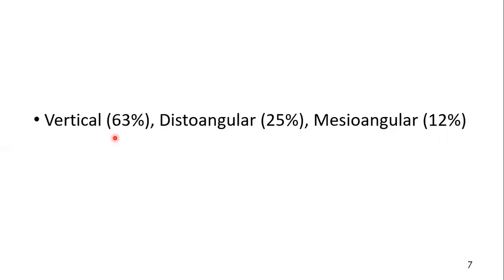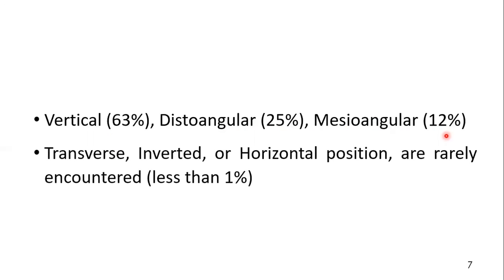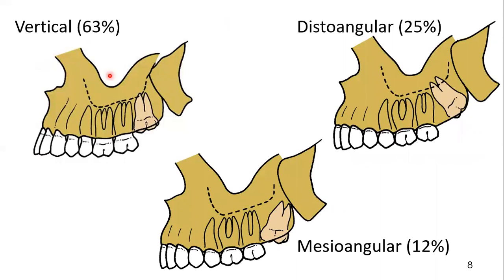Vertical impaction is the most common impaction, accounting for 63 percent of impactions. For mandibular impaction the most common is mesoangular, but here for maxillary it is vertical. Distoangular is the second most common, accounting for 25 percent. Mesoangular accounts for 12 percent, and the rest — transverse, inverted, or horizontal — are rarely seen and account for less than one percent.